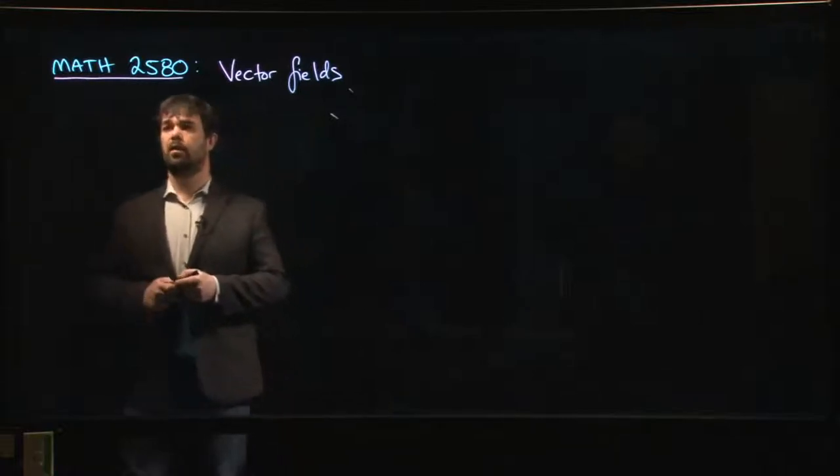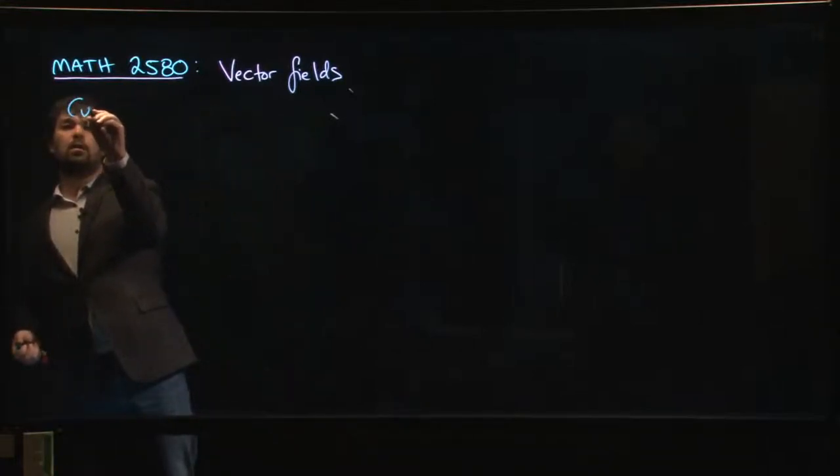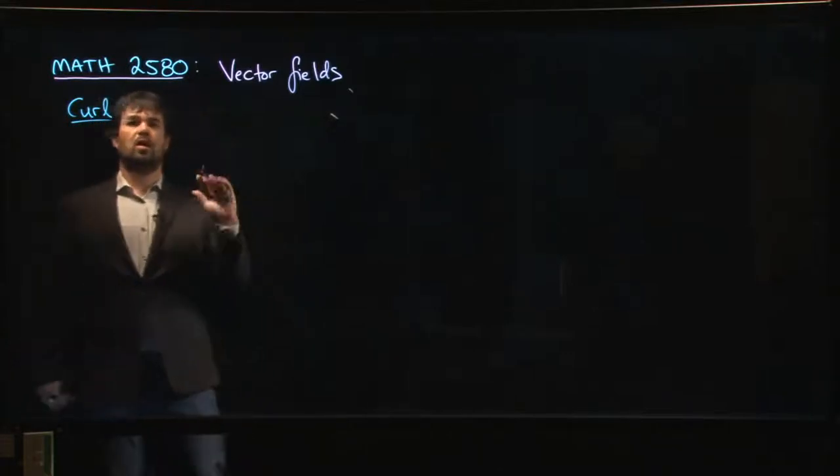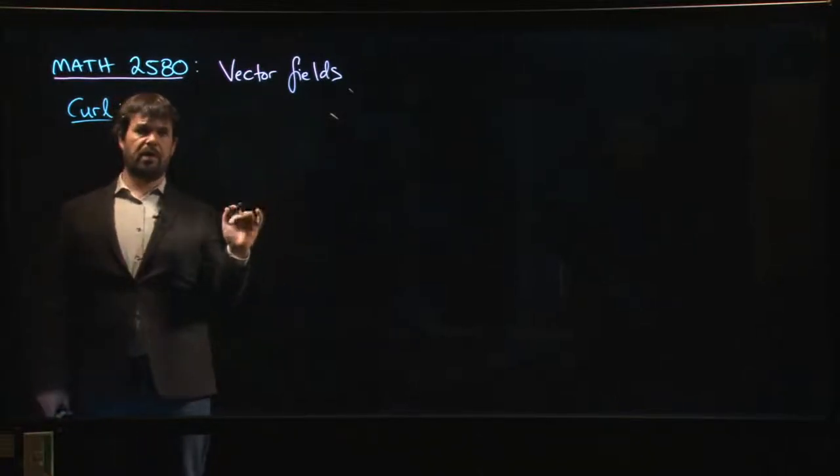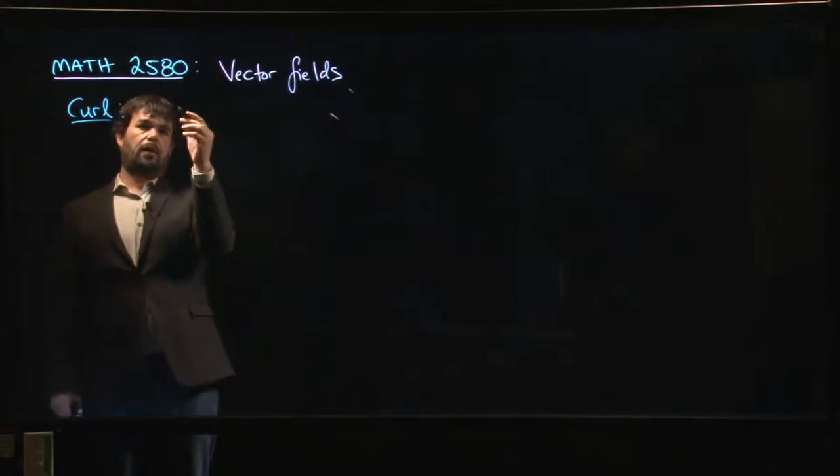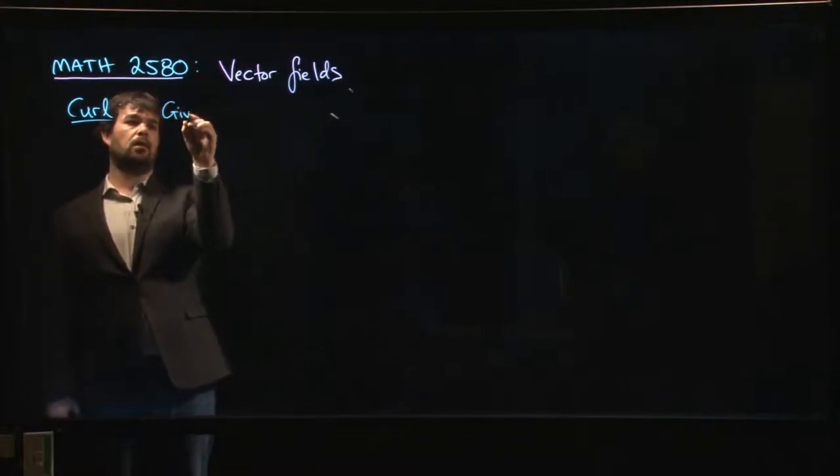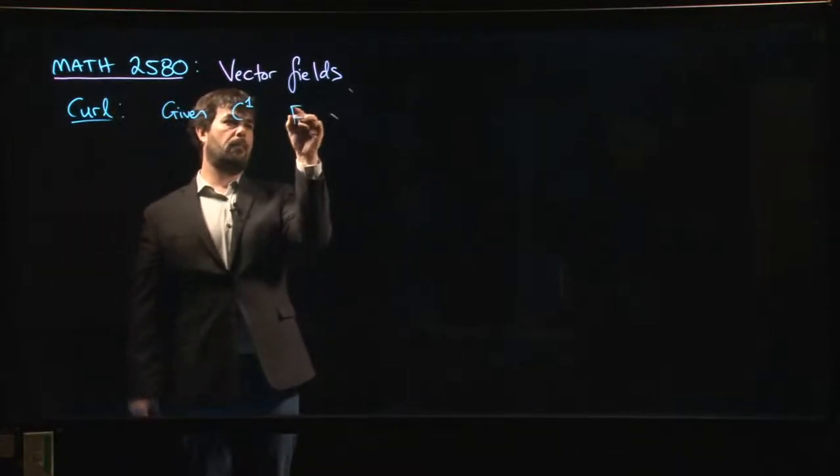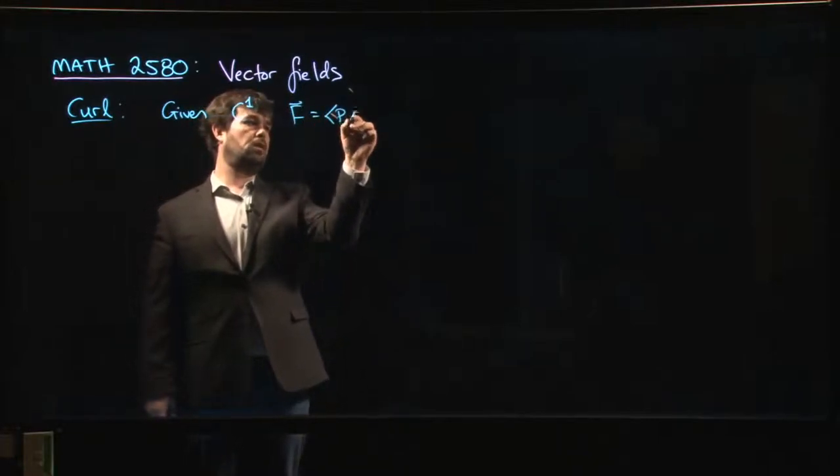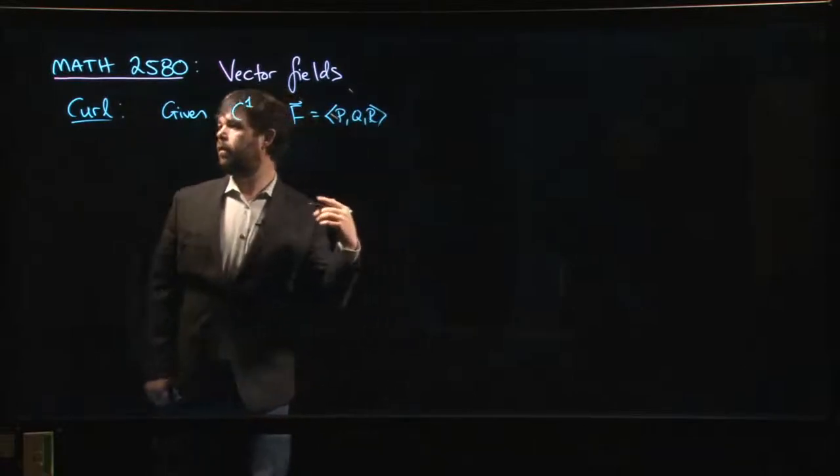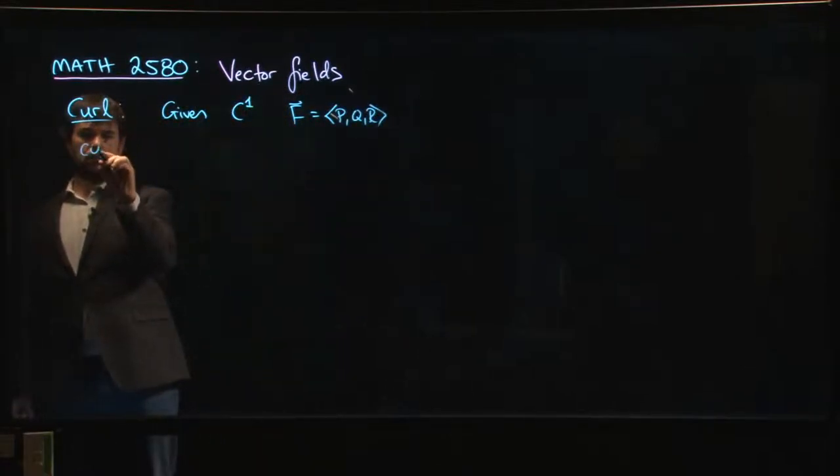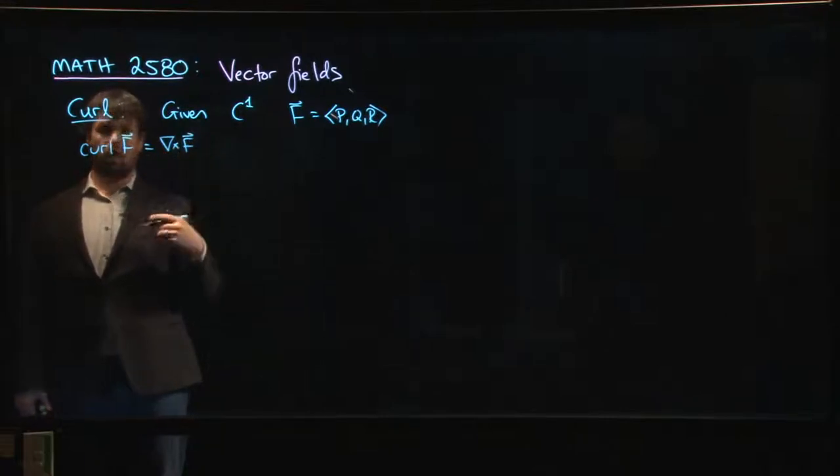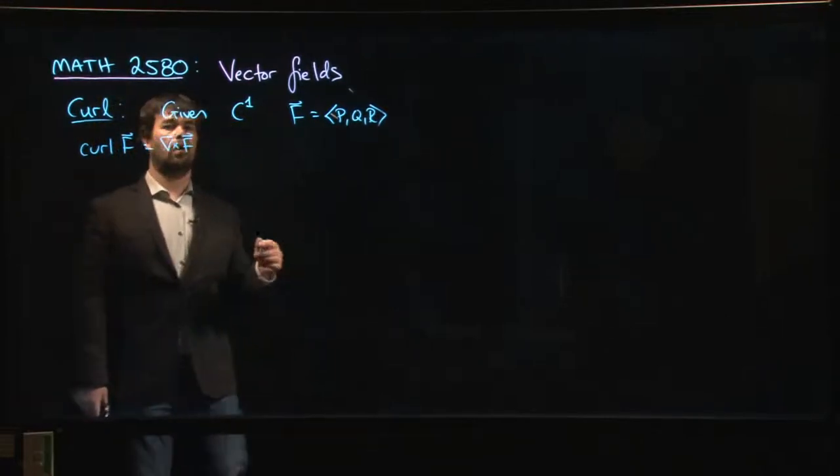All right, so in this video we're going to look a little bit more carefully at the curl of a vector field. Okay, so we tend to work pretty much in R3 here, although like I said, you can talk about curl in two dimensions, but most of the time we're given some C1 vector field F, and we'll write it as just P, Q, R. We can define the curl of F. So this is given through this del operator acting via the cross product on our vector field.